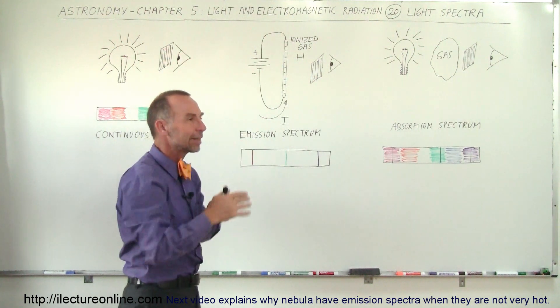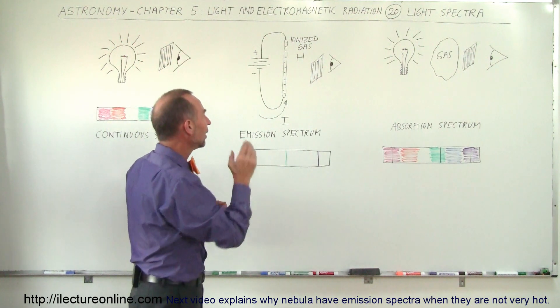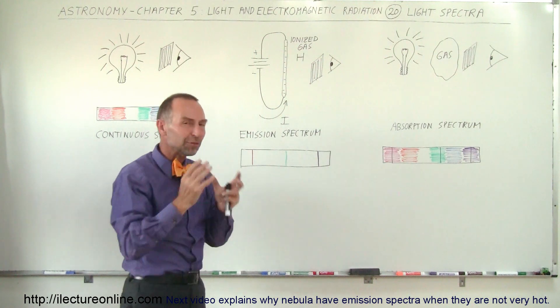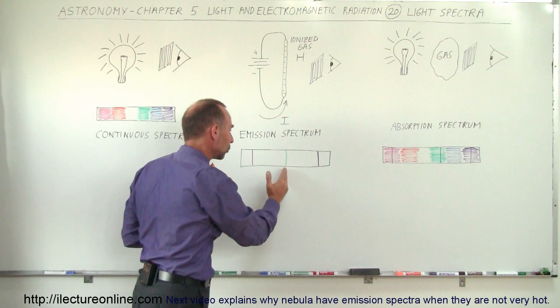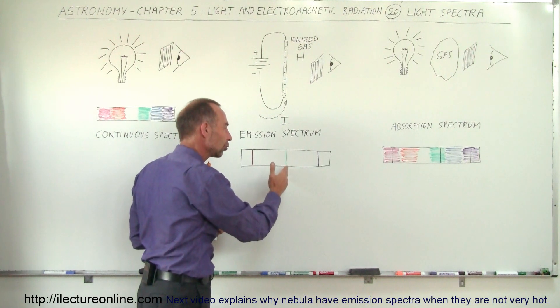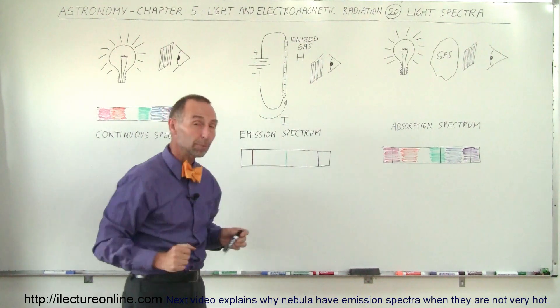The electrons in the hydrogen atom get knocked out to higher orbits and as they fall back down they emit light of very specific colors only. For example, we'll see a red light, a green or turquoise greenish bluish light, and a purple light from hydrogen gas.